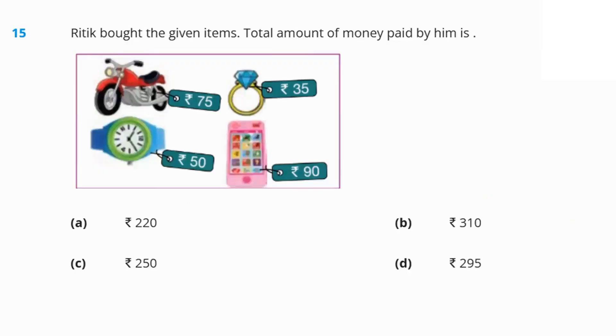Next question. Ritik got the given items. The total amount of money that has to be paid by him is how much? Add them up. Seventy-five plus fifty. That's one hundred and twenty-five. One hundred and twenty-five plus thirty-five. That's one hundred and sixty. One hundred and sixty plus ninety. That gives you two hundred and fifty. Option C is the answer.